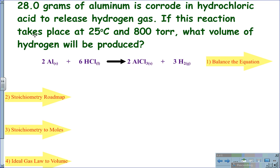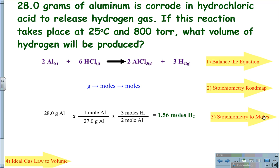In this case, we need to begin by taking the gram value and changing it to moles. So using a stoichiometry roadmap of grams to moles to moles, we can then calculate using stoichiometry, 28 grams of aluminum times one mole of aluminum over its AMU atomic mass unit from the periodic table of 27. Then use the mole ratio of three moles of hydrogen for every two moles of aluminum and we get a mole value of 1.56 moles of hydrogen.